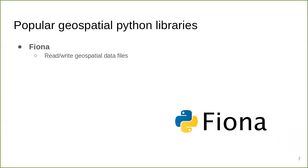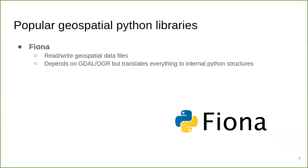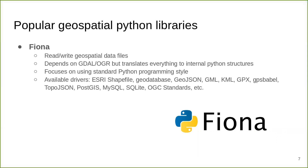Fiona is the package used to read and write geospatial data files, such as Shapefiles, GeoJSON, and other file data formats. It depends on GDAL but translates everything to internal Python data structures. It focuses on standard Python programming style, making it more appealing for Python programmers not familiar with GIS concepts. There are many available drivers that translate different GIS file formats into Python.